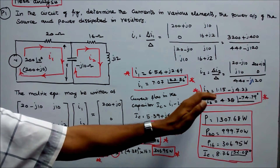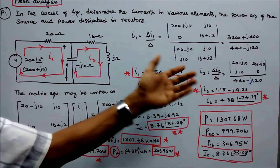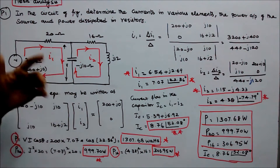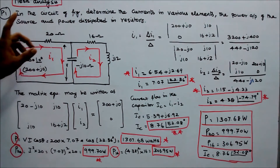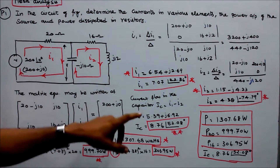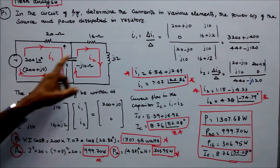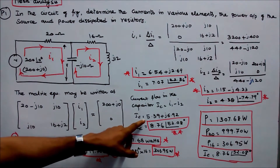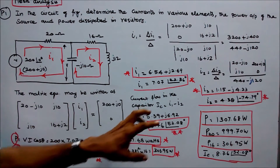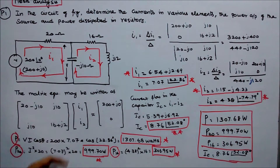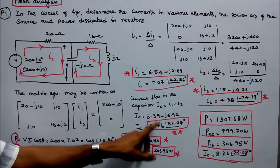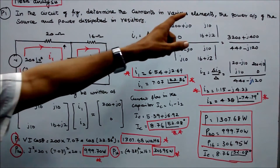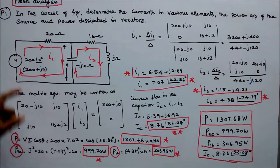Once i1 and i2 are known, the current through the capacitor is ic = i1 minus i2, giving ic = 5.39 + j6.92 amps in rectangular form, or 8.76 angle 52.08 degrees in polar form.